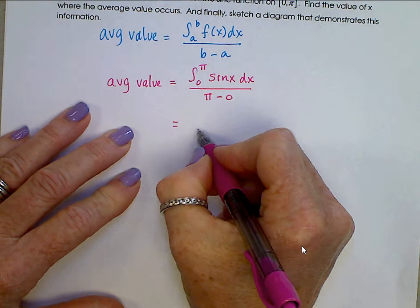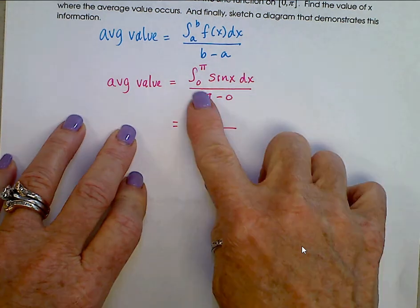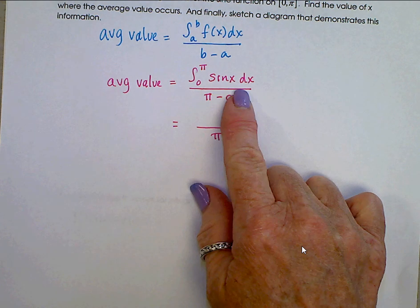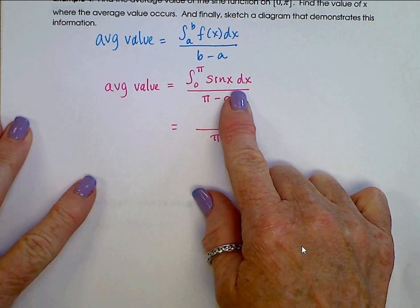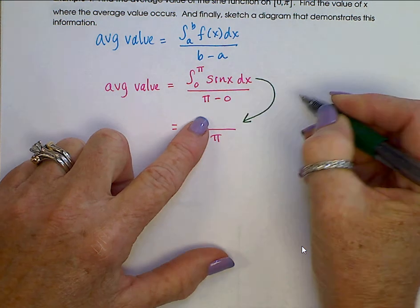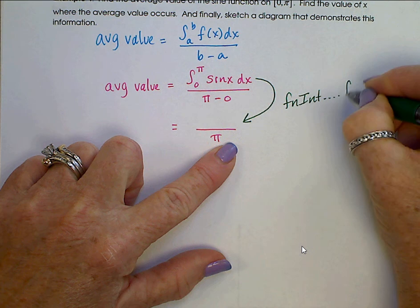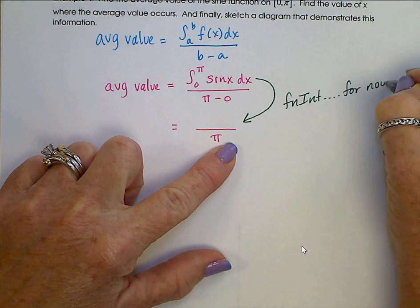Well, clearly the denominator is pi, and this one right here, the integral from 0 to pi of sine x dx, you can't do that one by hand yet. That one is f-n-i-n-t on your calculator for now.